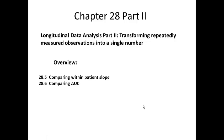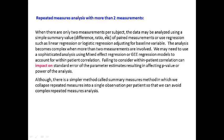In this video, I'm going to show you how to create effective summary measures to collapse repeatedly measured observations. When there are only two measurements per subject, the data may be analyzed using simple summary values such as difference or ratio of paired measurements, or using regression techniques like linear or logistic regression, adjusting baseline as a covariate. The analysis becomes more complex when more than two measurements are involved. We may need sophisticated analyses such as mixed effect regression or GEE regression models to account for within-patient correlation, because failing to consider this can impact the standard error of the parameter estimate, resulting in biased p-values and affecting the power of the analysis.